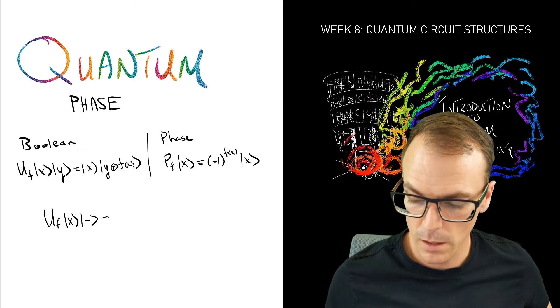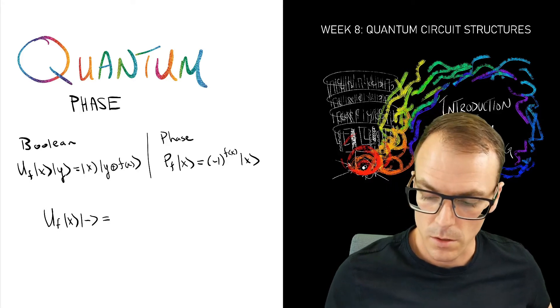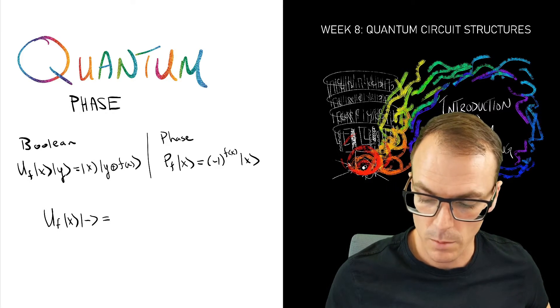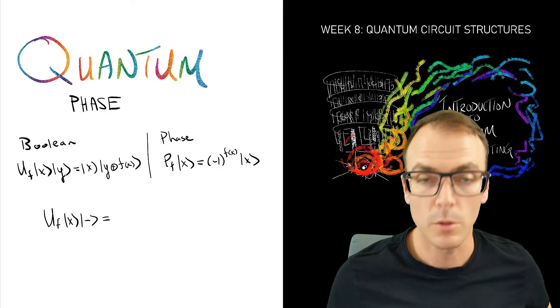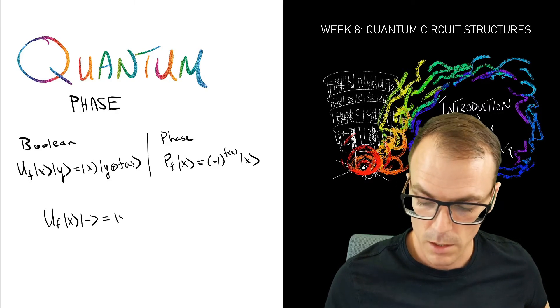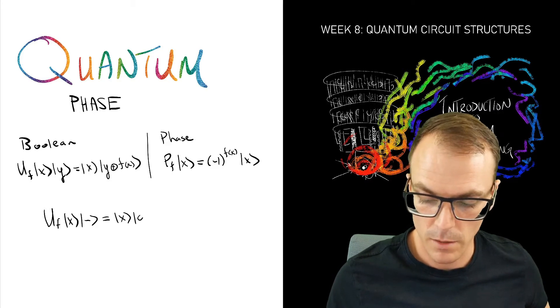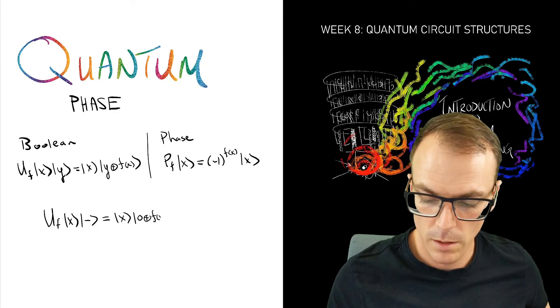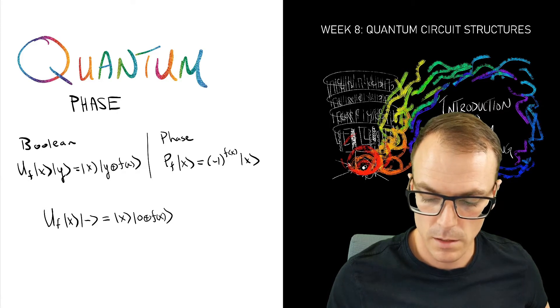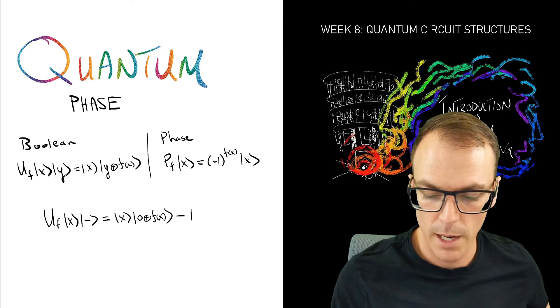The minus state has—and we're going to ignore factors of one over root two as we normally do—so we have |x⟩ and then we have |0⊕f(x)⟩ and then we have |−⟩.